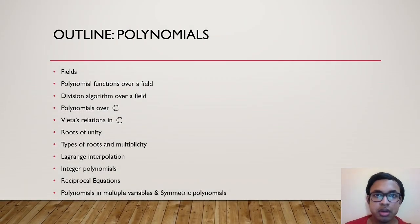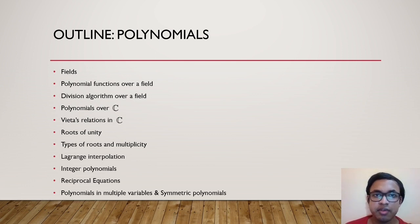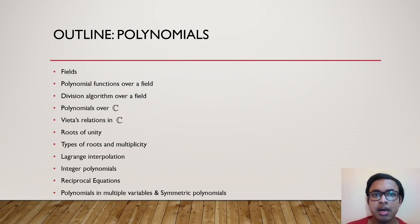The outline is as follows. First we will deal with fields, which are abstract sets with certain properties. Then we will see polynomial functions over a field — for example over R and C you have seen polynomials like x, x squared, x cubed plus x to the power 5 plus x to the power 6 and so on. Next we will move on to the division algorithm of polynomials over a field, like in number theory where dividend equals divisor times quotient plus remainder — we will see a similar result for polynomials.